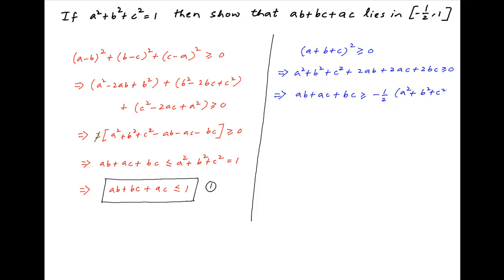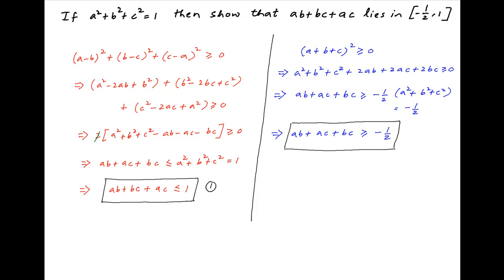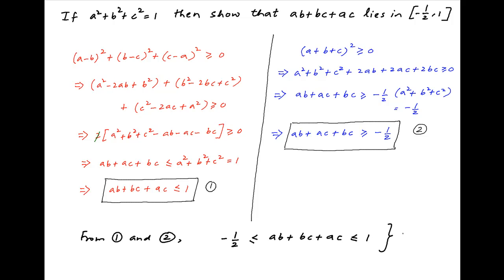Let's call this Result 2. The right hand side is equal to minus half because a² + b² + c² is given to be equal to 1. Therefore ab + ac + bc is greater than or equal to minus half. Combining Results 1 and 2, it follows that ab + bc + ac is greater than or equal to minus half and less than or equal to 1. And this is the desired result.